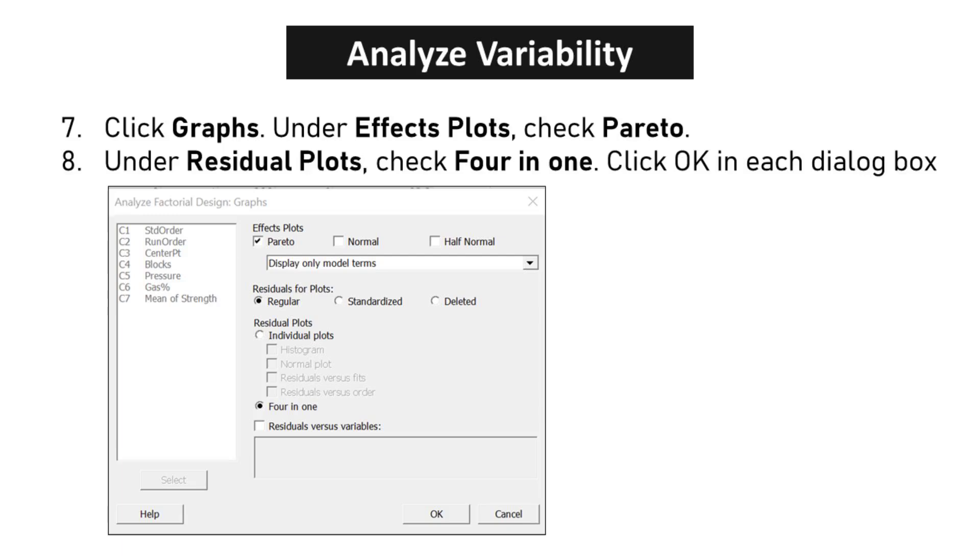Click GRAPHS. Under Effects Plots, check Pareto. Under Residual Plots, check 4 in 1. Click OK in each dialog box.